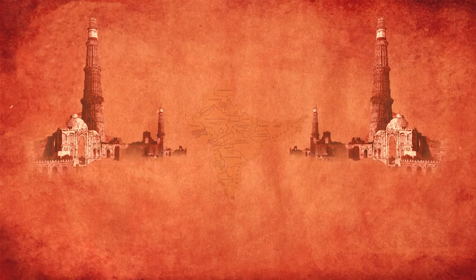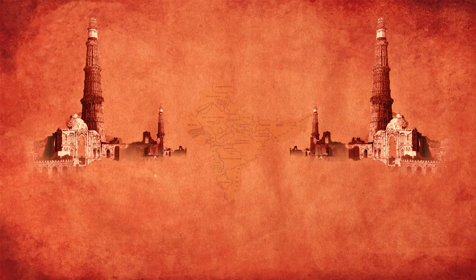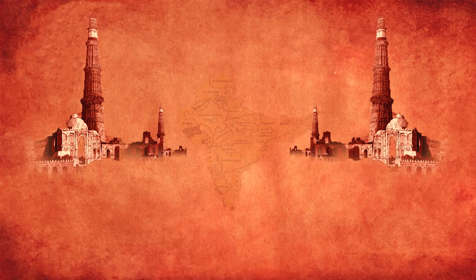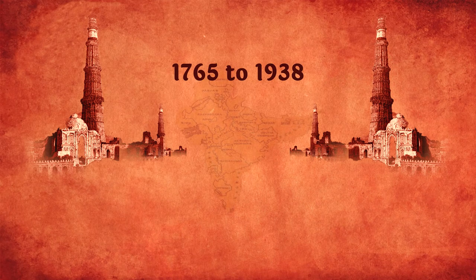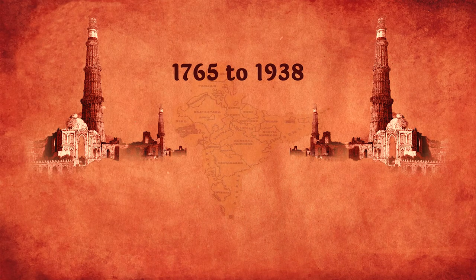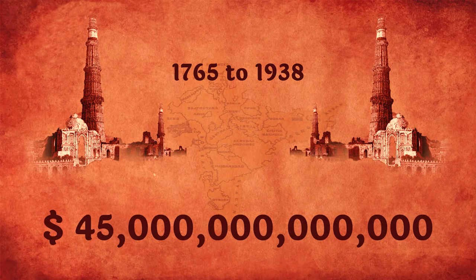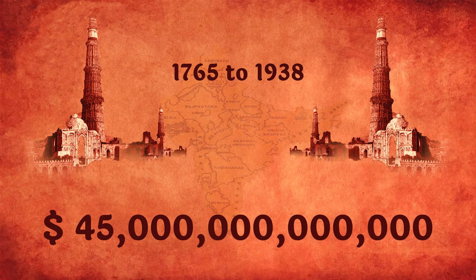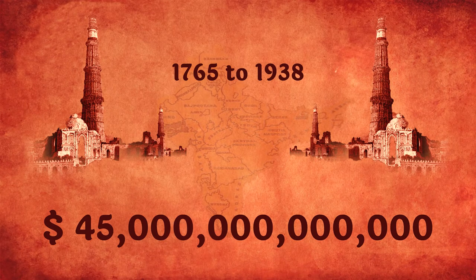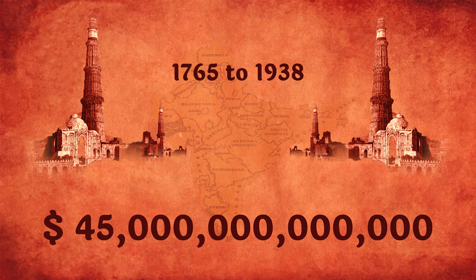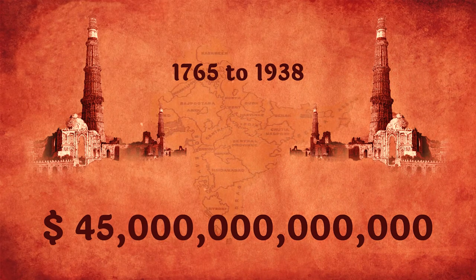Economist Utsa Patnaik has recently published research where she calculated that from 1765 to 1938, the British drained a total of nearly 45 trillion dollars from India. That's how massive the motive was — the motive of profiteering at the cost of Indian lives.